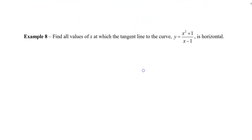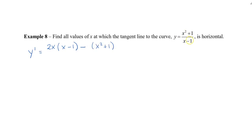The next example asks us to find all values of x at which the tangent line to this curve is horizontal. The tangent line slope is given by the derivative, so we find y prime. This is a quotient, so using the quotient rule: the derivative of the numerator is 2x plus 0, times the denominator, minus the numerator (x squared plus 1) times the derivative of the denominator, which is 1. All of that is divided by (x minus 1) to the power of 2.